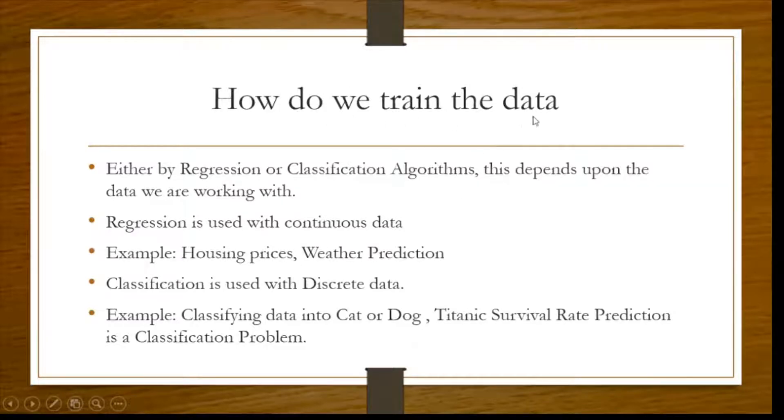Now how do we train the data? We train it by any of the algorithms, depending on the data set. And we have seen that regression works with continuous data, that is housing price, weather predictions. And we use linear or logistic regression for this.